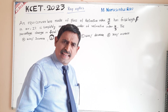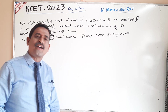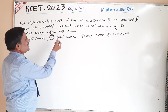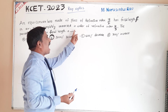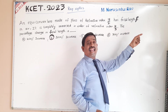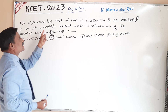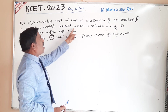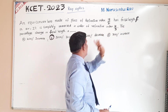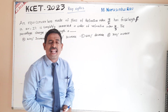My name is M. Narasimha Rao, lecturer in physics. An equi-convex lens made of glass of refractive index 3/2 has focal length f in air. It is completely immersed in water of refractive index 4/3. The percentage change in focal length is to be found.